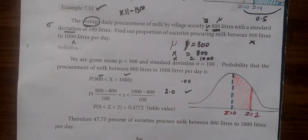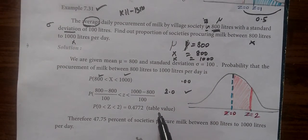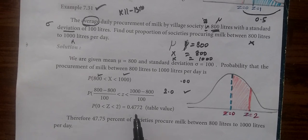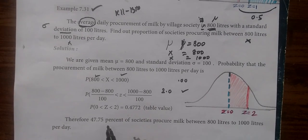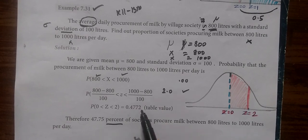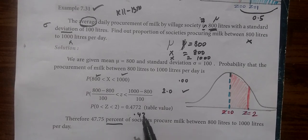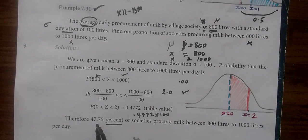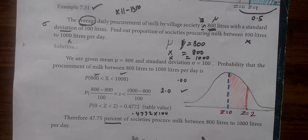So this answer is, two digits multiplied by 100 for percentage. So 0.4772 into 100, two digits and points, 47.75 percentage.